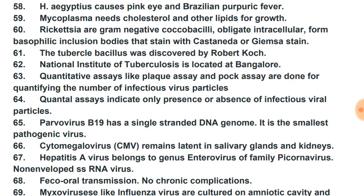Parvovirus B19 has a single-stranded DNA genome and is the smallest pathogenic virus. It causes pancytopenia and affects bone marrow. Cytomegalovirus remains latent in salivary glands and kidneys.